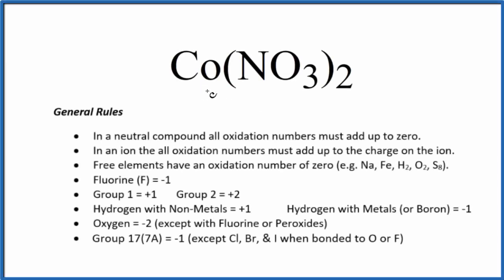To find the oxidation numbers for the cobalt here in cobalt 2 nitrate, we use these rules here. There's no negative or positive after the cobalt 2 nitrate. That means it's a neutral compound. All the oxidation numbers will add up to zero.